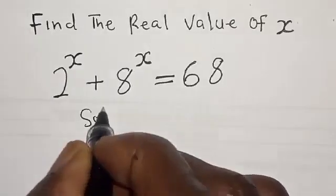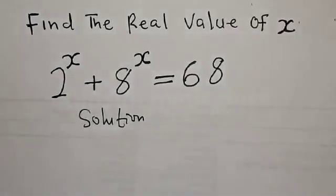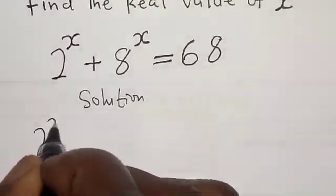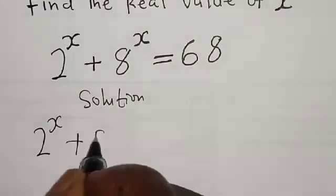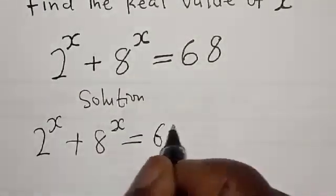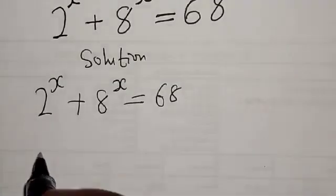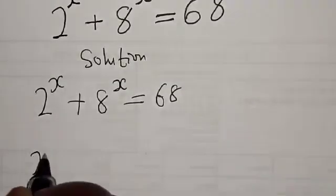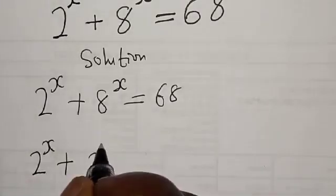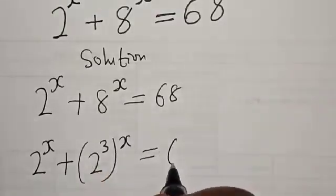Solution. We have the given equation: 2 raised to the power x plus 8 raised to the power x is equal to 68. Then we have 2 raised to the power x plus 2 raised to the power 3, raised to the power x, is equal to 68.